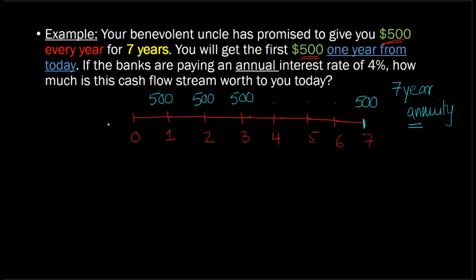So now that you understand what an annuity is, if somebody comes up to you and says the banks are paying an annual interest rate of 4%, how much is this cash flow stream worth to you today? What is the present value of all of this to you today?